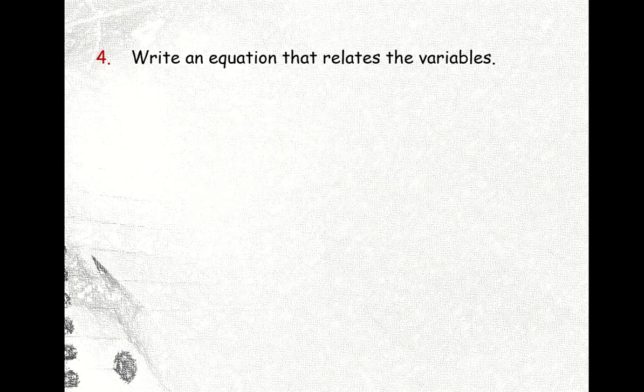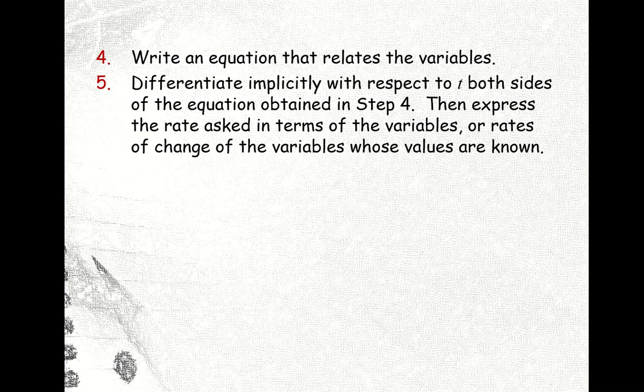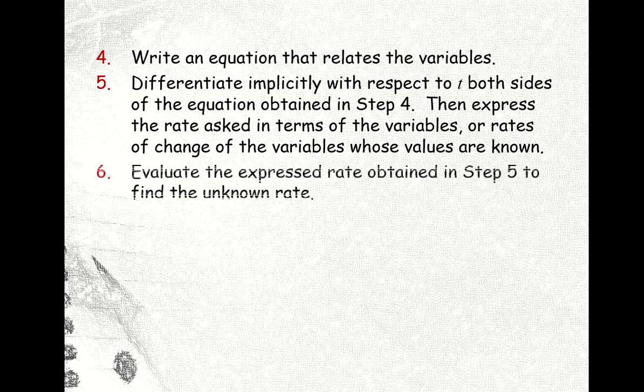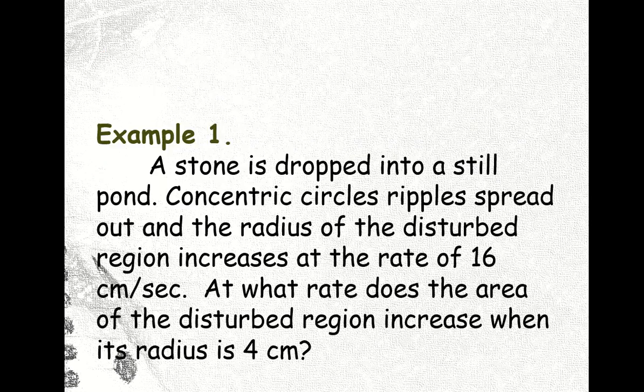Okay, and number four, write an equation that relates the variables. And number five, differentiate implicitly with respect to t both sides of the equation obtained in step number four. Then express the rate asked in terms of the variables or rates of change of the variables whose values are known. Then number six, evaluate the expressed rate obtained in step number five to find the unknown rate.